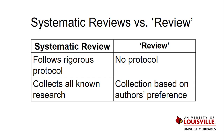Unlike systematic reviews, these reviews require no protocol when assessing the evidence. They also summarize literature according to the author's preference for the needs of their article, as opposed to systematically collecting all research conducted on a single topic. If a review is systematic or it is a meta-analysis, it will clearly be marked as one.